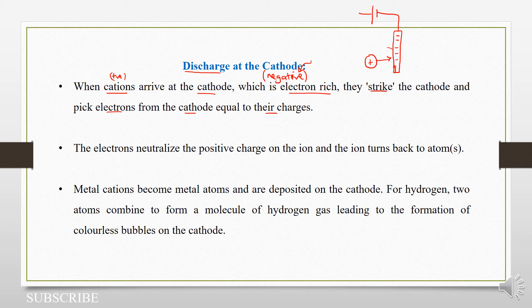So we shall have an electron being picked by this cation. So let us take an example of a cation — let us say M²⁺. This is our cation with a charge of two. If it reaches the cathode, it will pick two electrons.